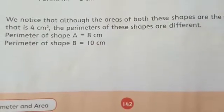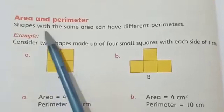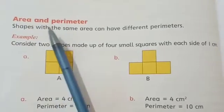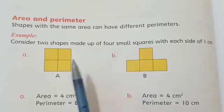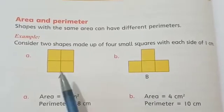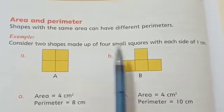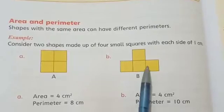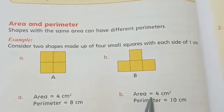Now come to next page. Page number 142. Now we have to compare area and perimeter. Shapes with the same area can have different perimeters. Yes, it is true. Shapes with the same area can have different perimeters. Consider these two shapes. Shape A and Shape B. Made up of 4 small squares. This is also made from 4 small squares. And this also. Its area is 4 cm square. Similarly, its area is 4 cm square.